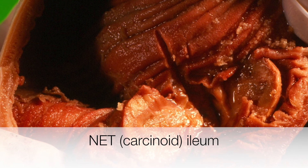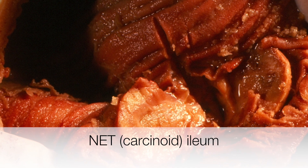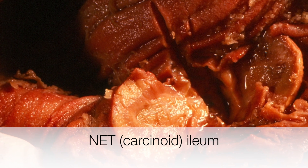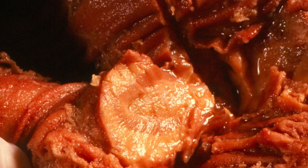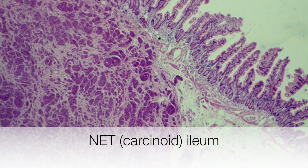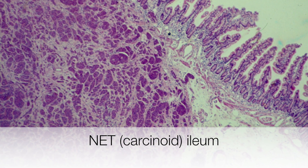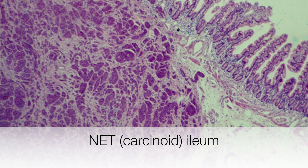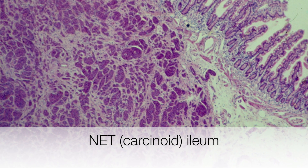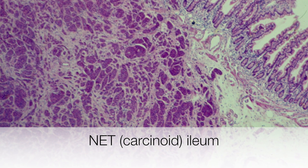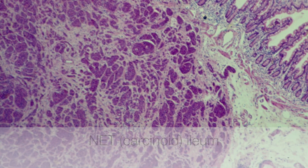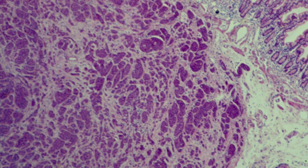This is a segment of ileum and there is a yellow tumour, which is another example of a neuroendocrine tumour or carcinoid. This is the histological appearance of a neuroendocrine tumour or carcinoid in the ileum, and the tumour is located in the submucosa.